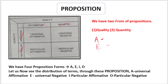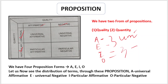All affirmative propositions are different from negative ones. Affirmative carries a positive sense while negative carries a negative sense. Universal affirmative is denoted by A, universal negative by E, particular affirmative by I, and particular negative by O. So we have A as universal, E as universal, I as particular, and O as particular.